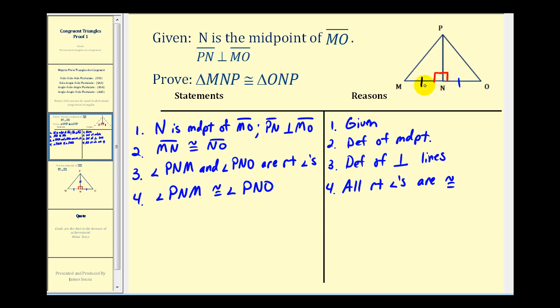So far we have two sides congruent and two angles congruent. And then because both triangles share segment PN, segment PN of course is congruent to itself. This is by the reflexive property.